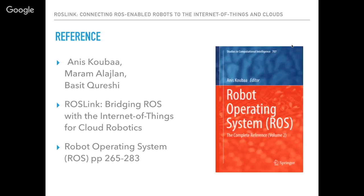Regarding references, I'm also an editor of four books on Robot Operating System with Springer. The current talk has a book chapter in the second volume of the Robot Operating System book, co-authored with my colleagues — you can read more about the details of the ROSLink protocol there. We are now editing volume four of the ROS book, with a deadline of July 15th — in one week — so if you have something ready and would like to contribute, this is a good opportunity. The ROS book is in the top 25 percent of the most downloaded books on Springer in the last two years.